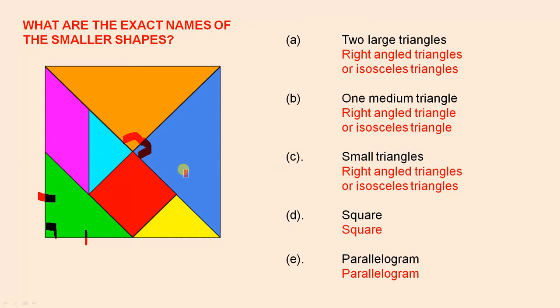The small triangles, which is the blue one and the yellow one, they are also right angle triangles or isosceles triangles. The square is just a normal square and the parallelogram is just a normal parallelogram.